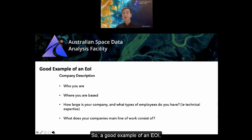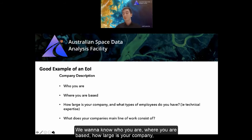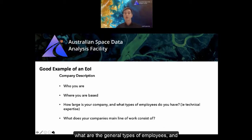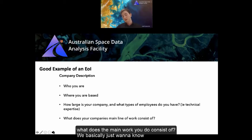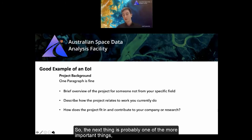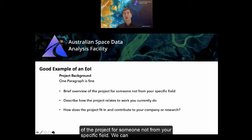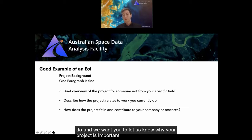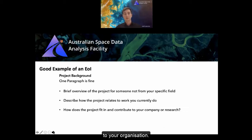A good EOI starts with a company description: tell us who you are, where you're based, how large your company is, what types of employees you have, and what your main work consists of. The next important field is the project background — one paragraph is fine. Give a brief overview for someone not from your specific field. We can iron out details in a technical discussion afterwards, but we want to know how the project relates to your current work and why it's important to your organization.